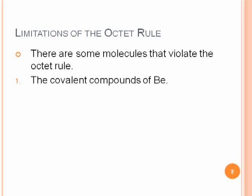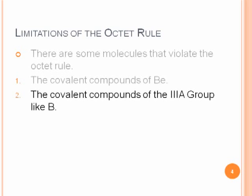Covalent compounds of beryllium, where beryllium will normally have four electrons instead of the eight required by the octet rule. Covalent compounds from group 3A elements like boron, where boron may have six electrons instead of eight, although there are some compounds of group 3A elements that do obey the octet rule on occasion.